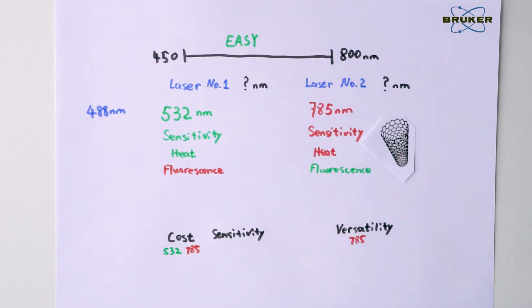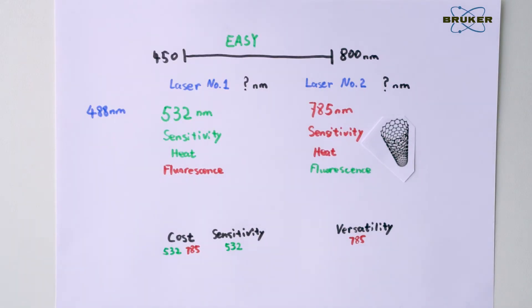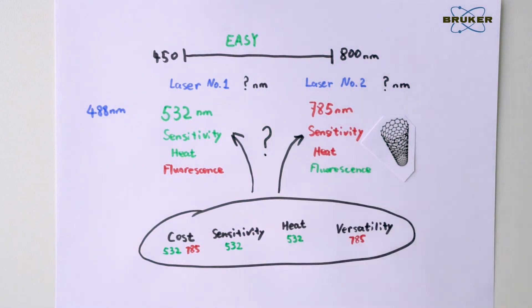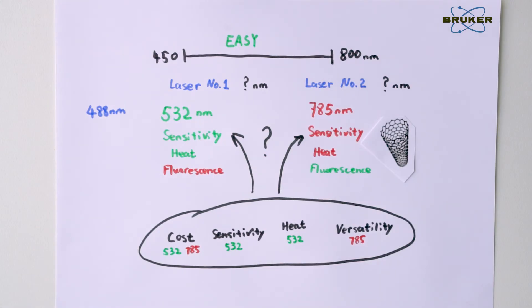Besides the applicational requirements, the 532 and 785 nm lasers are most used in Raman instruments because they are mature, reliable, and cost effective. But concerning sensitivity, fluorescence effect, sample heating, and cost, the choice of laser remains difficult.